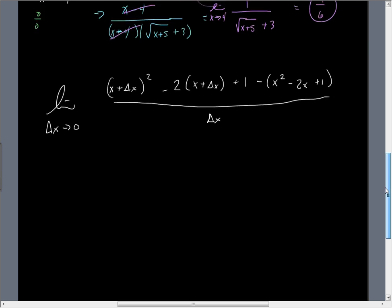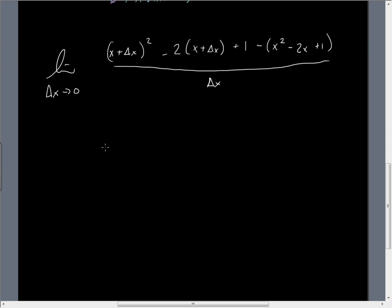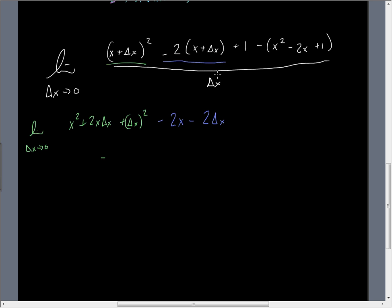Now for this more complex problem — it looks awful but it doesn't have to be. I liken it to cleaning out cupboards: rather than one piece at a time, rework the whole thing. So I'll expand the top out. This portion is x² + 2x·Δx + (Δx)², then negative 2x minus 2·Δx, then the rest: plus 1 minus x² plus 2x minus 1 — all over Δx.